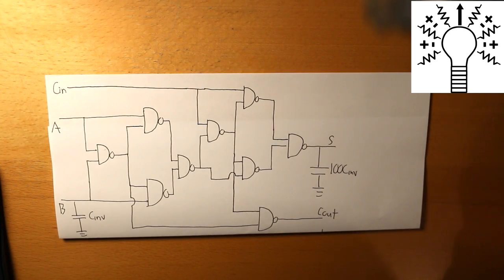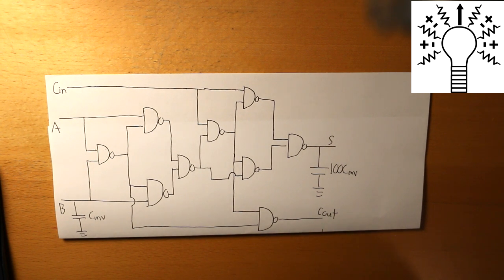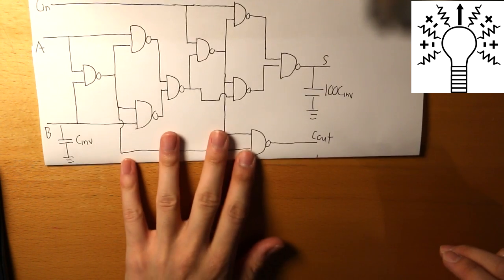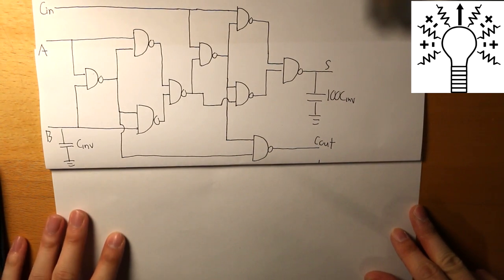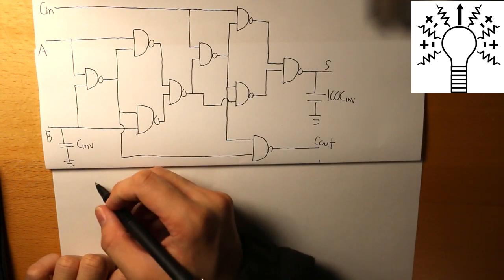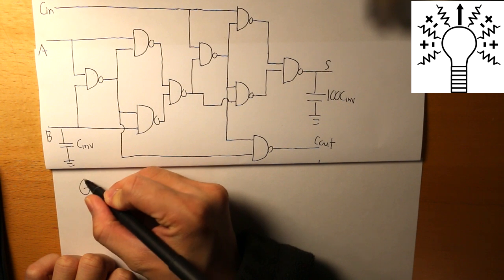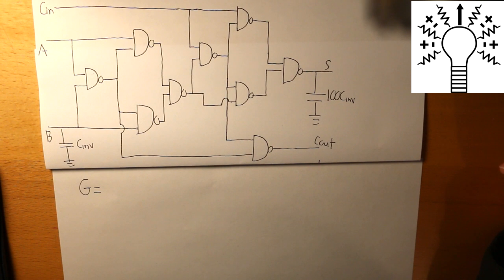Here is our full adder again. As we can see, I've included the output capacitance and the input capacitance, and now we're going to compute the effort delay. I'll provide some extra space to calculate our effort delay. So let's start off with our capital G — capital G is the gate for the NAND gate, which is 4 over 3.